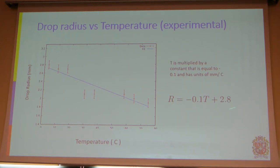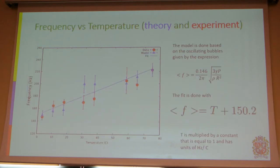We took the radius versus temperature experimentally and did this fit for our data. Then we took the frequency versus the temperature. The blue points are the theory approximation with this equation, and the red is the experimental data.